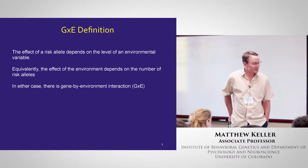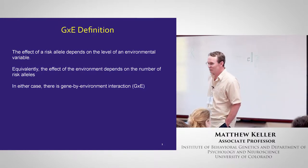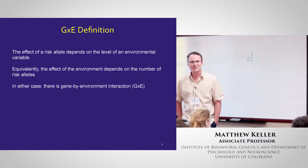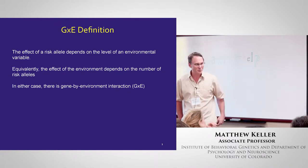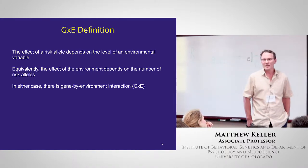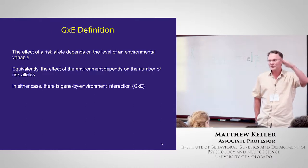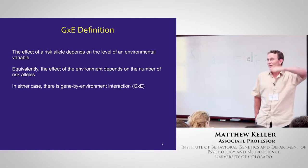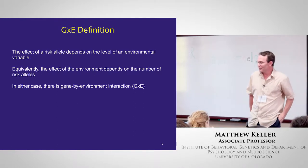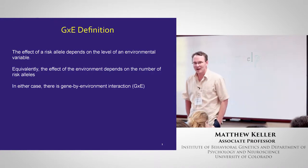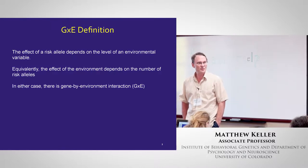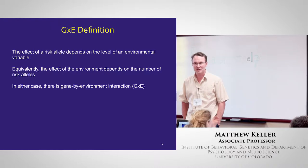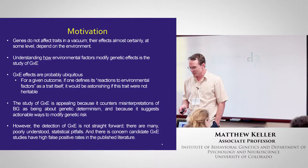So, G×E definition. We can think of the effect of a risk allele depending on the level of the environment. The effect of the ApoE4 gene might depend on the amount of carbohydrate intake — this is a finding in the literature, whether it's true is debatable. If you have a lot of carbohydrates and you have E4, it's particularly bad; few carbohydrates and E4 isn't so bad. Equivalently, the effect of carbohydrate intake depends on the genetic variant you have. If you have E4, the environment matters a lot; E3, not so much. In either case, we'd call that a gene-by-environment interaction.